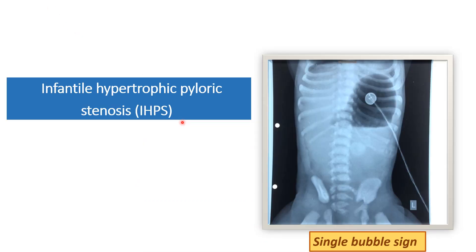On USG abdomen, the pyloric transfer thickness will be increased and it will also be elongated because of the hypertrophy of circular and longitudinal muscles of the pylorus. On USG abdomen, there will be a string sign because of the narrow, thickened, and elongated pylorus.